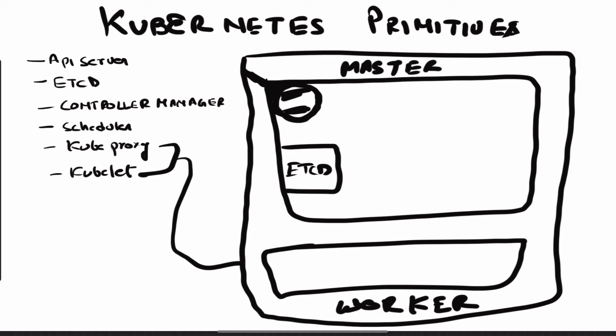Coming to etcd — etcd is a key-value based database, and it stores information about everything happening in the Kubernetes cluster. It has information about nodes, all the worker nodes, the pods that are running, deployments, services, and everything. Basically, Kubernetes etcd stores information about whatever is happening in the cluster and whatever components are there at any particular moment.